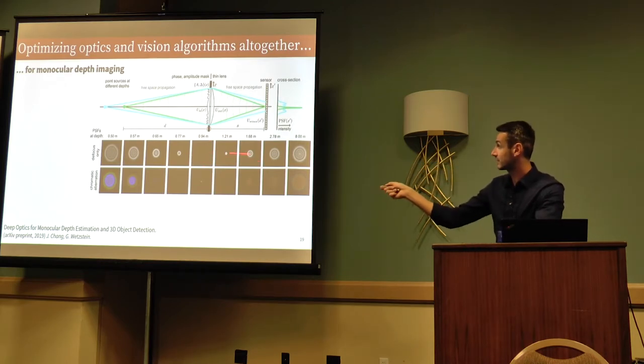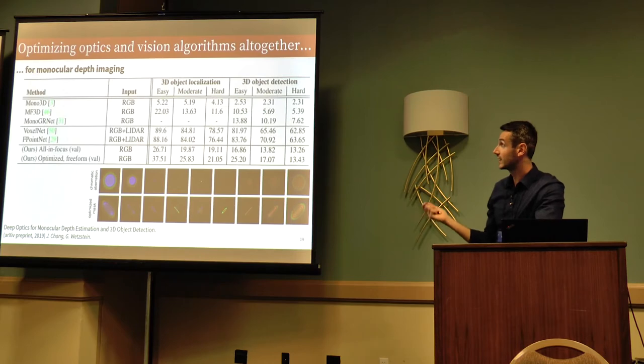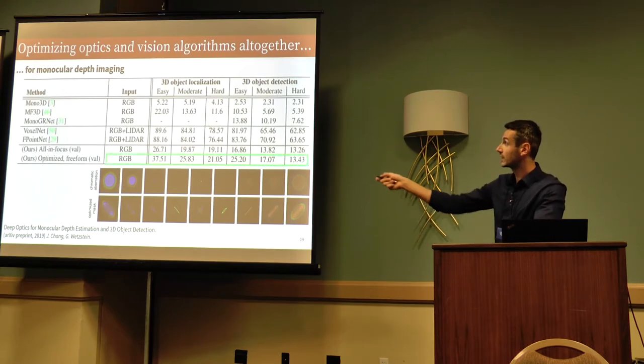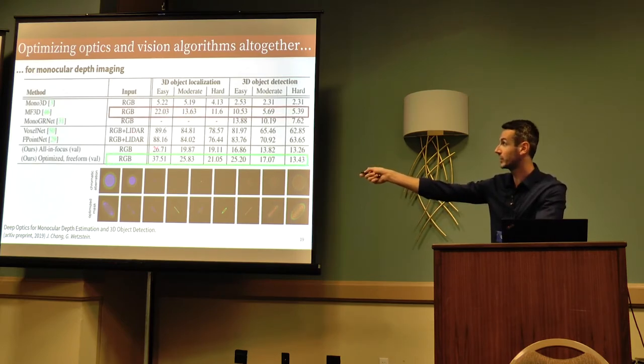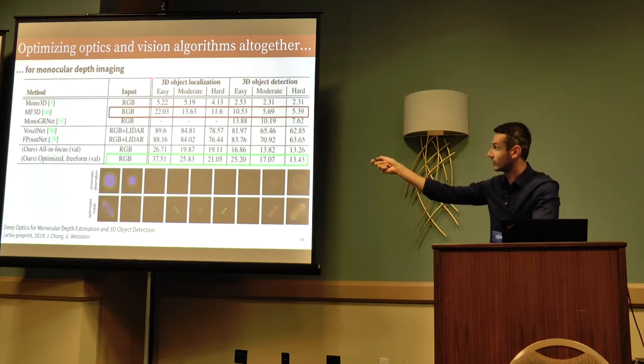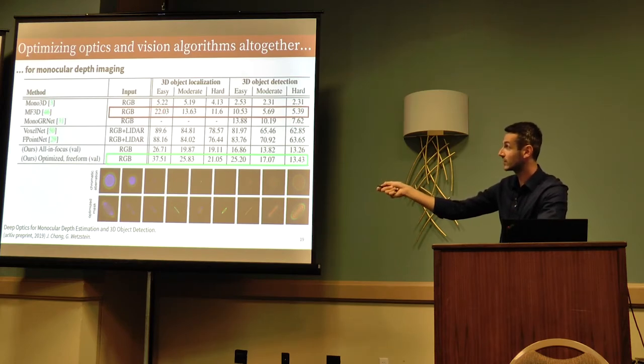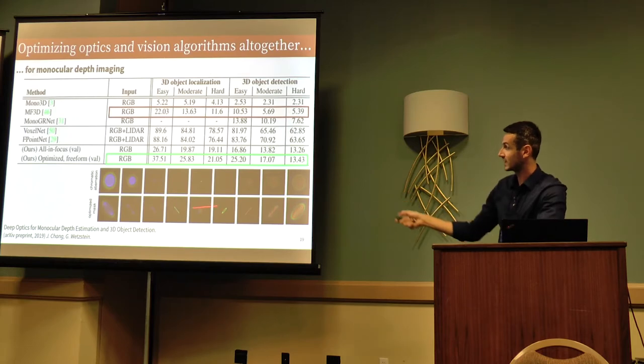Interestingly, there are full symmetries here, and you might use chromatic aberration and even rotation of the PSF to encode depth information, and it turns out that if you do so, you end up being not quite as good as if you were using a LiDAR, so this is on some KITTI dataset, but you're actually much better than just conventional methods that would try to do monocular depth imaging directly on RGB images. This was done on images taken via this system that was using this lens.